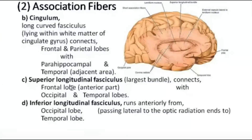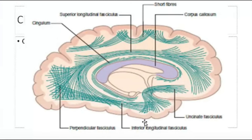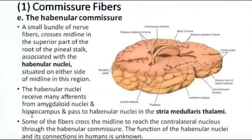The inferior longitudinal fasciculus runs anteriorly from the occipital lobe and passes to the temporal lobe. It is inferior in position and smaller than the superior longitudinal fasciculus. The superior longitudinal fasciculus connects the frontal lobe with the occipital and temporal lobes, whereas the inferior longitudinal fasciculus connects the occipital lobe with the temporal lobe.